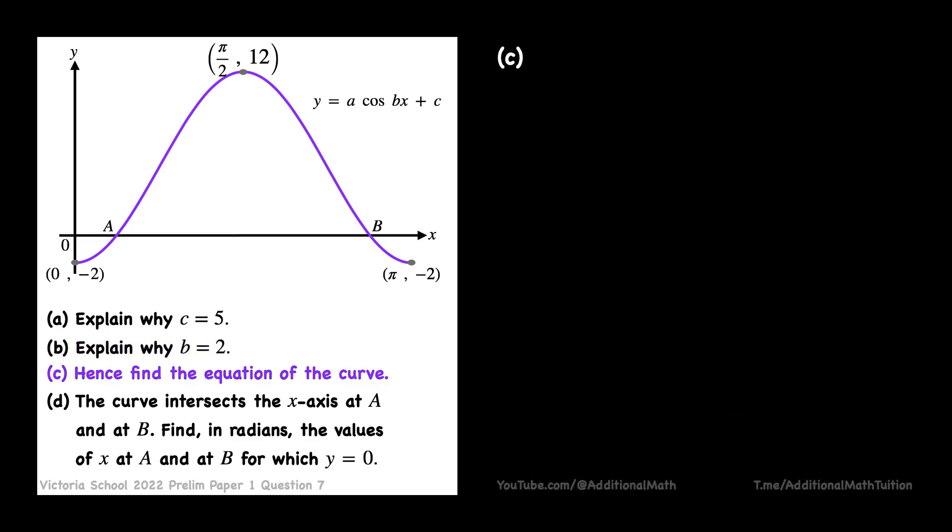That leaves us with only a, the amplitude of the cosine graph. The amplitude can be found by taking the difference of the maximum and minimum value of y and divided by 2, which is found to be 7.